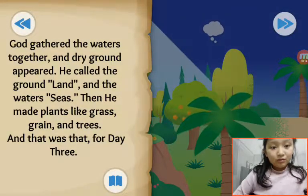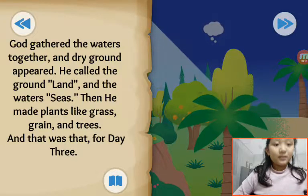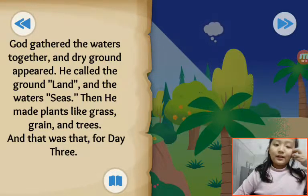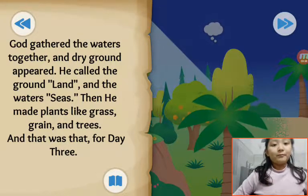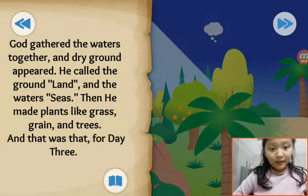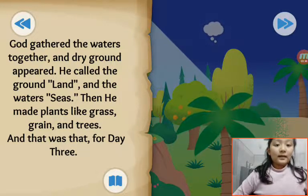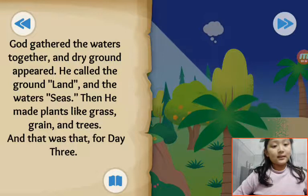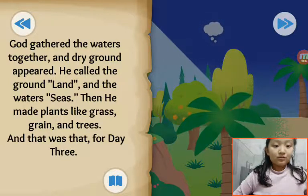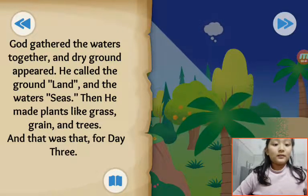God created the water together and dry ground. He called the ground land and the waters seas. Then he made plants like grass, grain, and trees, and that was that for day 3.